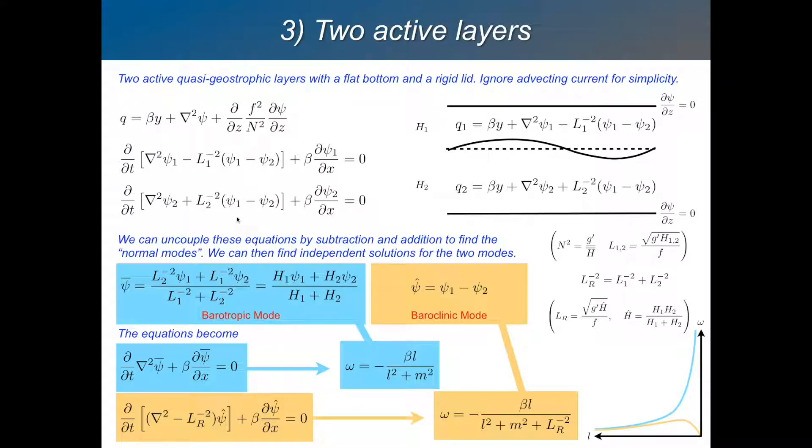We need to think in terms of new variables which will give us two independent equations. This is very much the same thing that we were doing in the first lecture where we were decoupling things into vertical modes. Even with different layer thicknesses we can define what we call the barotropic mode, psi bar, which is a weighted sum of the stream function by the layer thicknesses. You can also express it in terms of the Rossby radius. And the baroclinic mode, which is just the difference between the two layers.